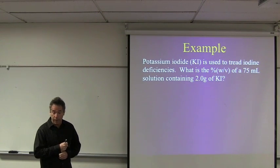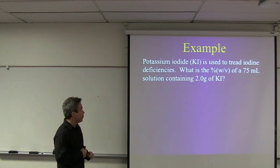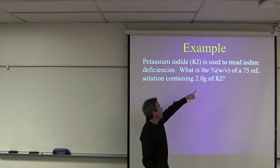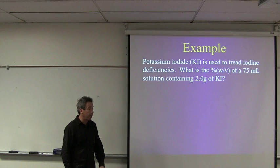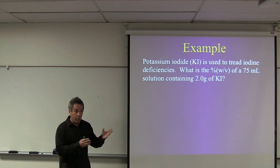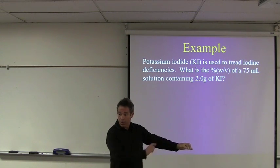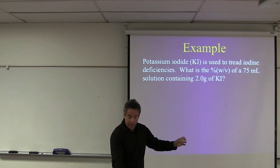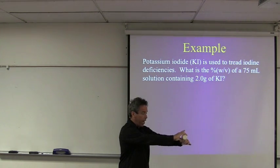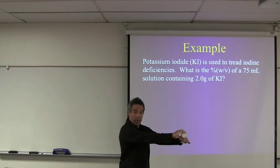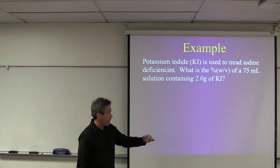I want to show you how to calculate the concentration with these units of a solution. We're going to make a solution of potassium iodide, sometimes used to treat iodine deficiencies. What's the percent weight to volume of a 75 milliliter solution containing 2.0 grams of potassium iodide? Before we do that calculation, I want to show you guys what it would be like really to see making this solution. How I'd do this in the lab is, I would take a container and I would put it on the balance.